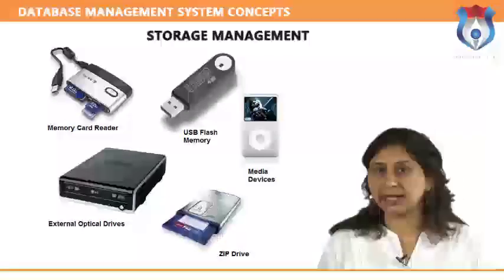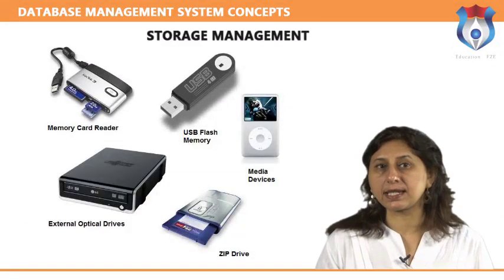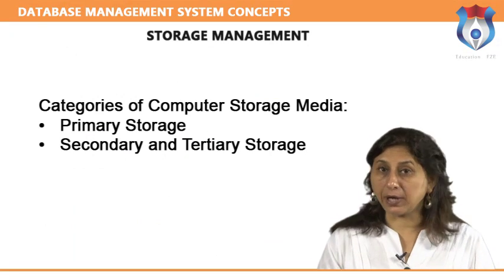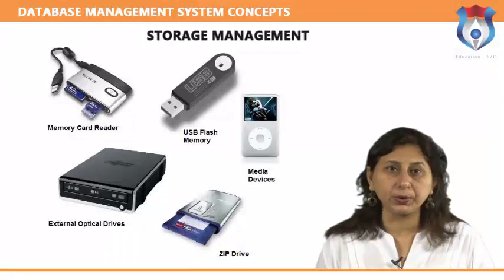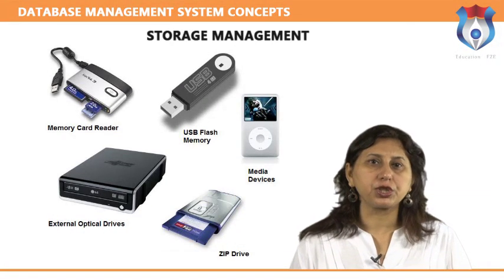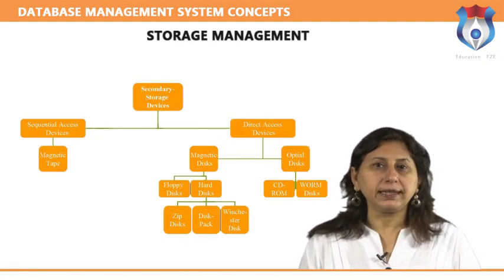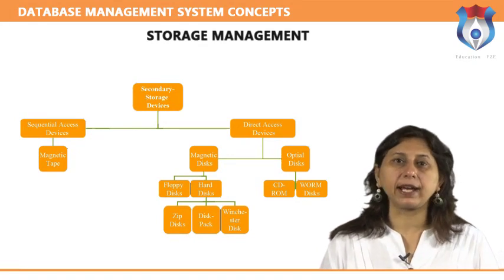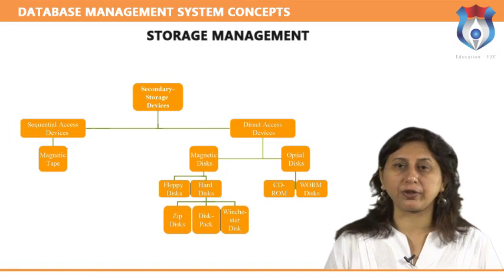Storage management: the collection of data that makes up a computerized database must be stored physically on some computer storage medium. The DBMS software can then retrieve, update and process this data as needed. Computer storage media form a storage hierarchy with two main categories. Primary storage includes media operated on directly by the CPU, such as main memory and cache memories — fast access but limited capacity. Secondary and tertiary storage includes magnetic disks, optical disks, CD-ROMs, DVDs, and tapes. Hard disk drives are secondary storage; removable media like optical disks and tapes are tertiary storage.